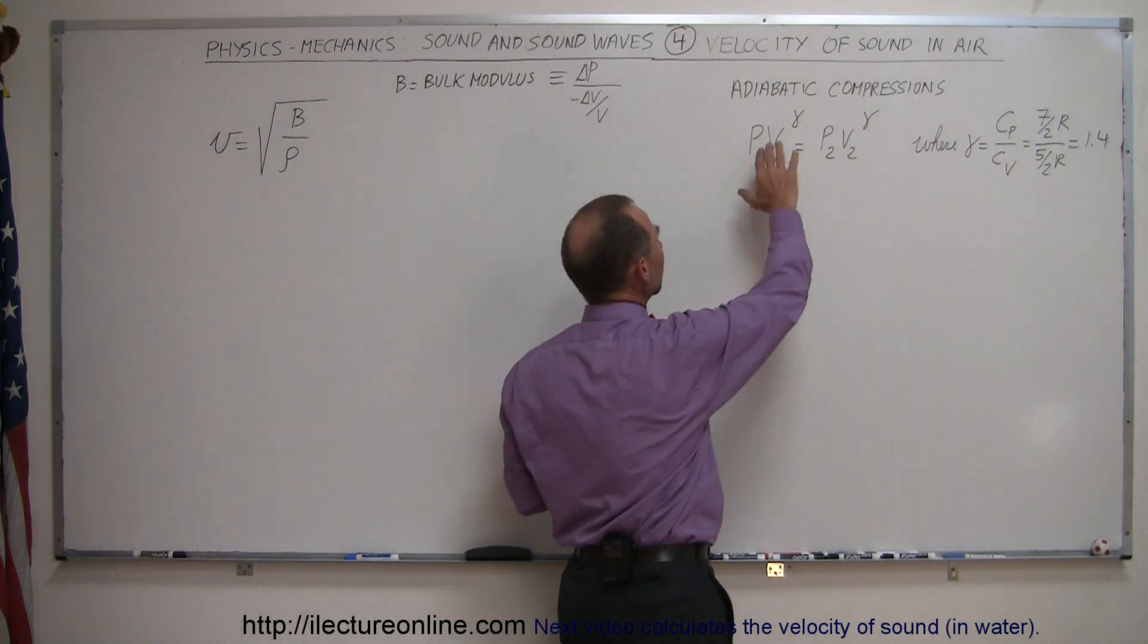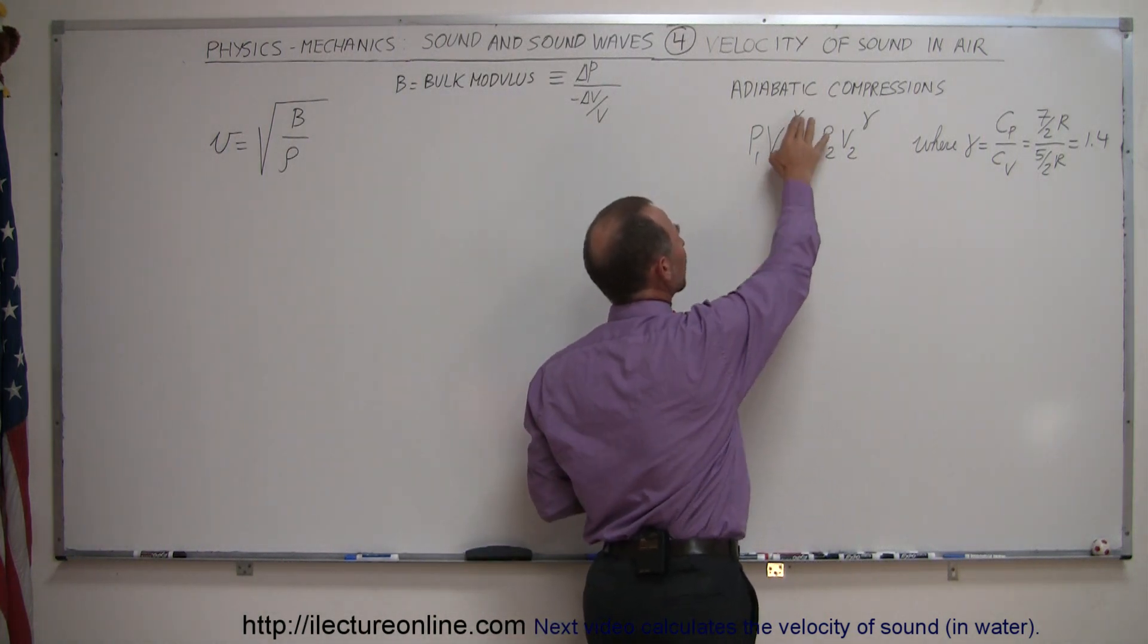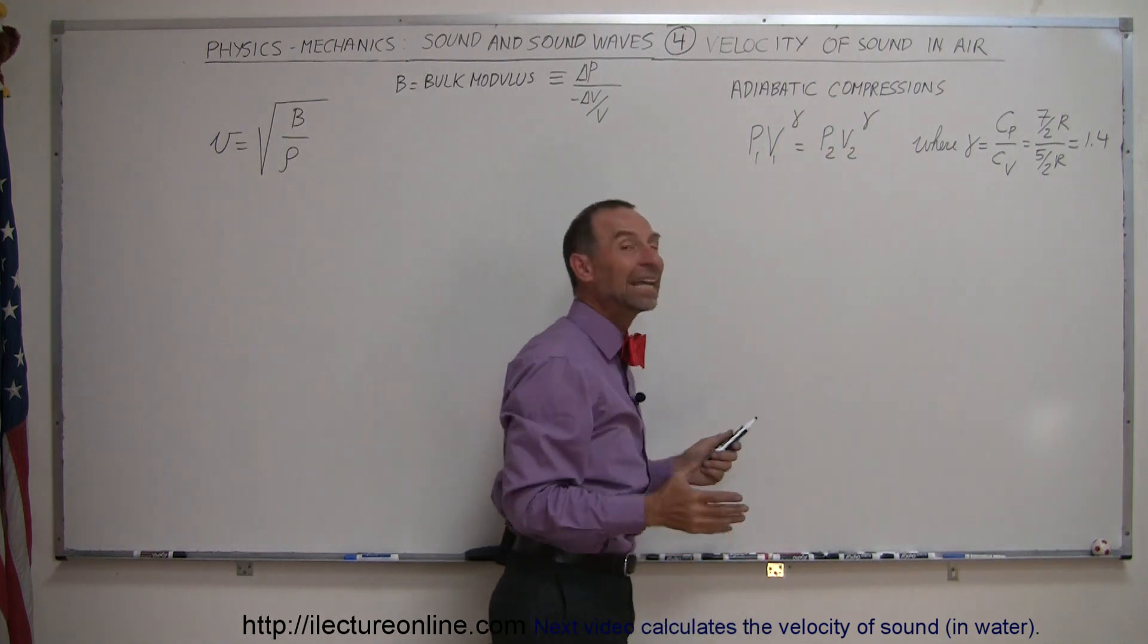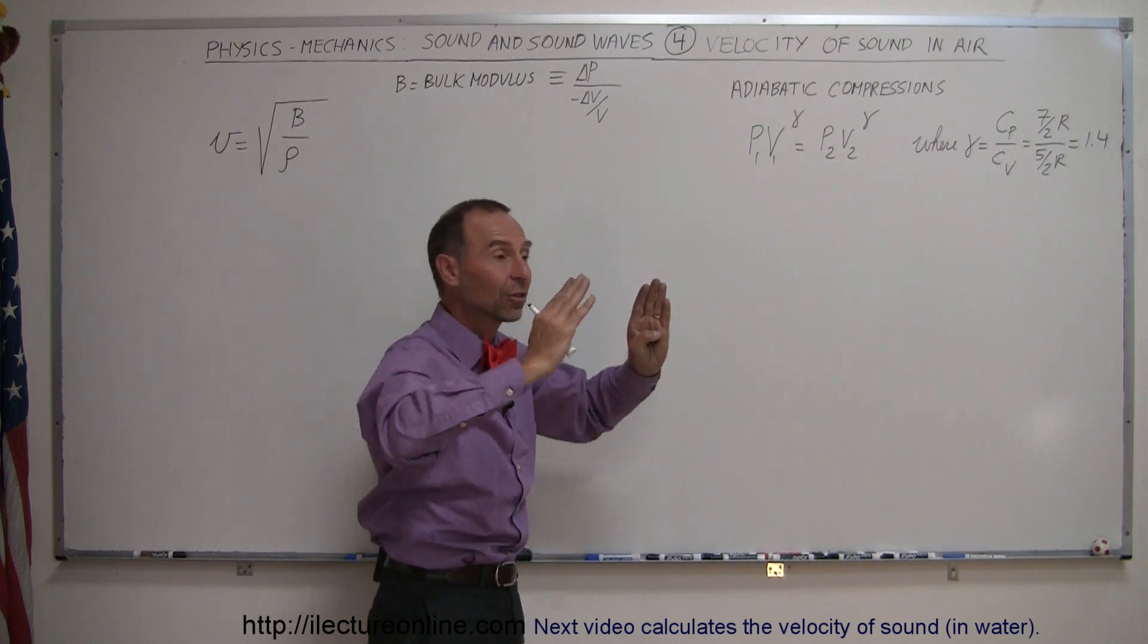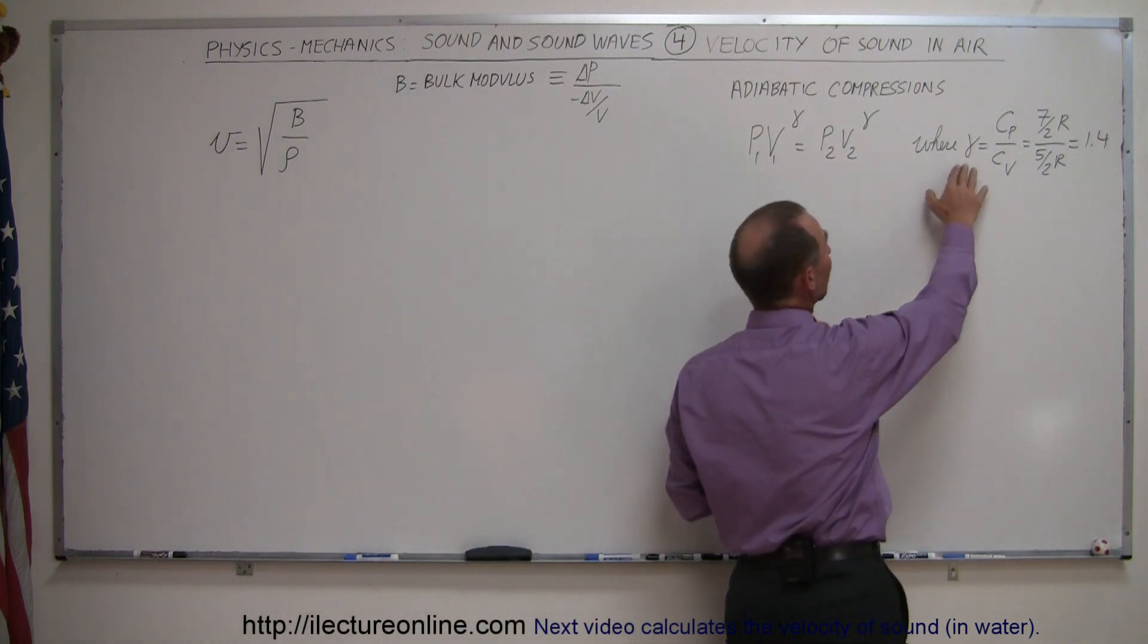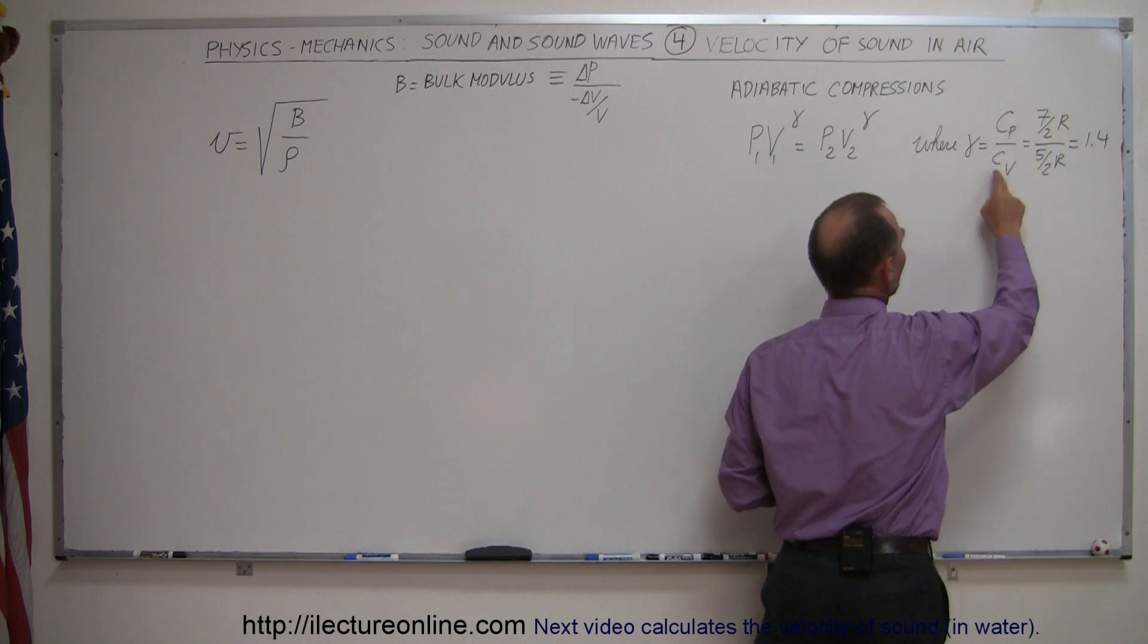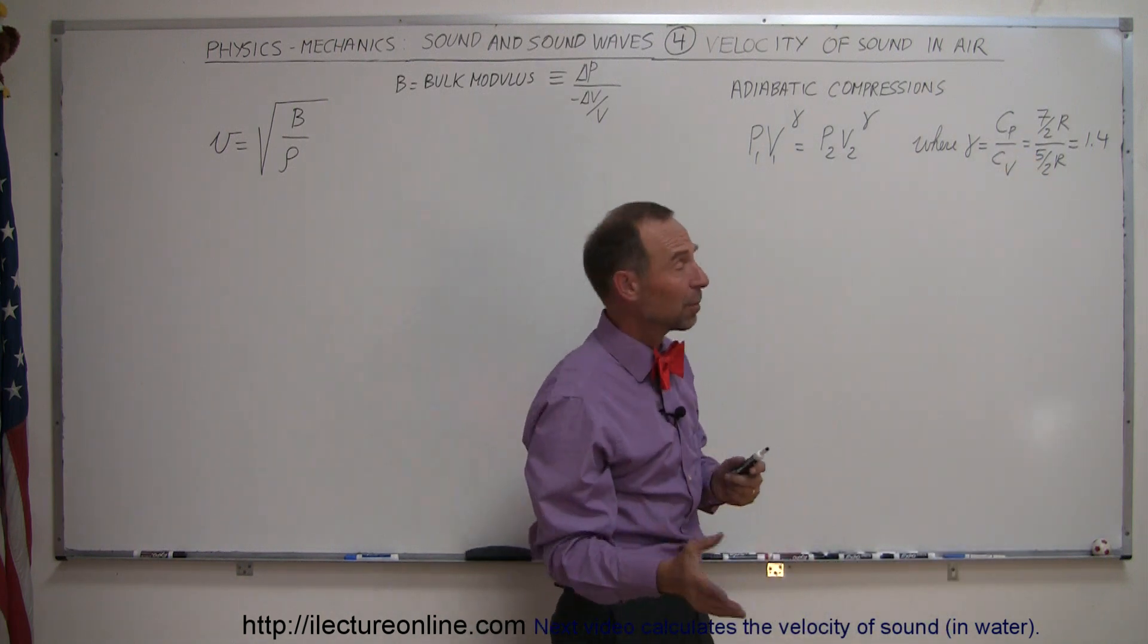An adiabatic compression is defined so that the pressure times the volume to the gamma equals the pressure times the volume to the gamma in two different states of the air. When the air is rarefied and then compressed, it goes through this quick change. The gamma is simply a ratio of the specific heat at constant pressure divided by specific heat at constant volume, which for air, which is a diatomic molecule,